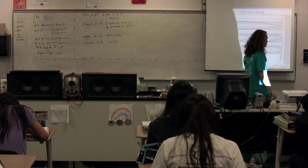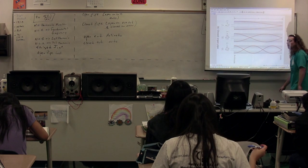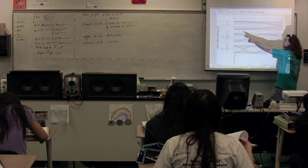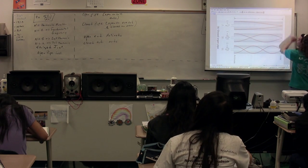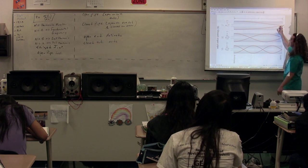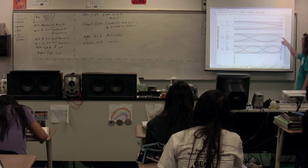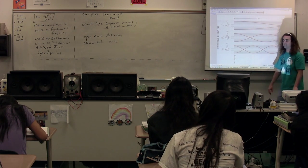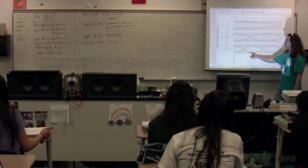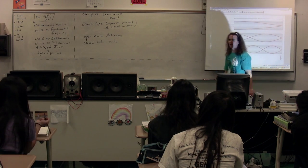If we close one end, we have a closed pipe instrument. We have an antinode at one end and a node at the other end. In this particular case, this is actually only a quarter of the wavelength, which is equal to L. This is three-fourths of the wavelength is equal to L, and this is five-fourths of the wavelength is equal to L.